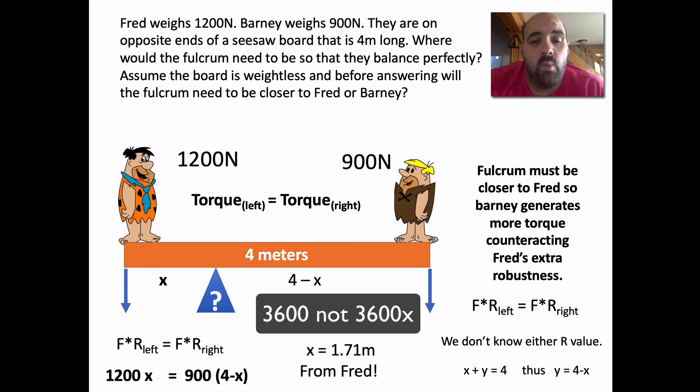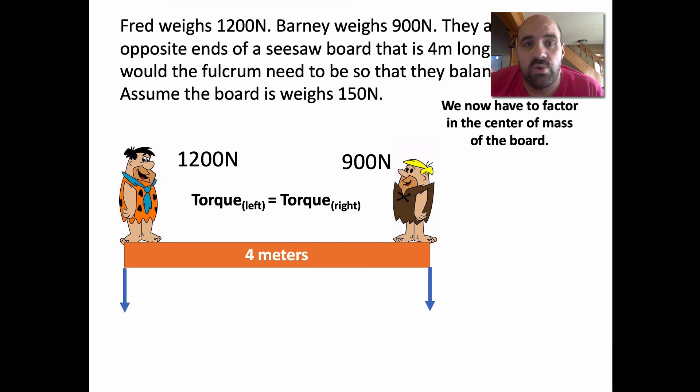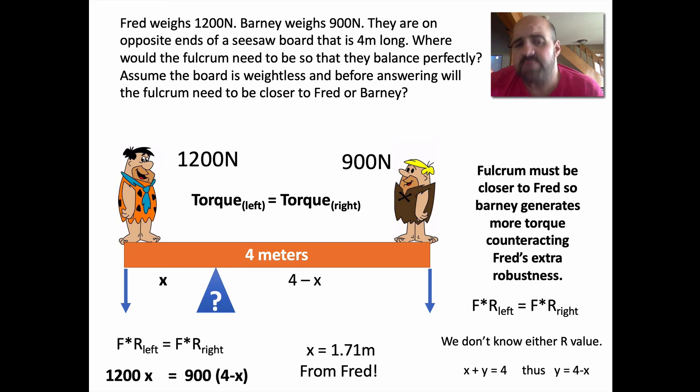Fred ends up being 1.71 away. That means Barney is the difference from four. The whole thing is four. If Fred is 1.7, then Barney is going to be 2.3 or 2.29. You just do a little subtraction to figure that out. All right. So that's how you solve this problem.